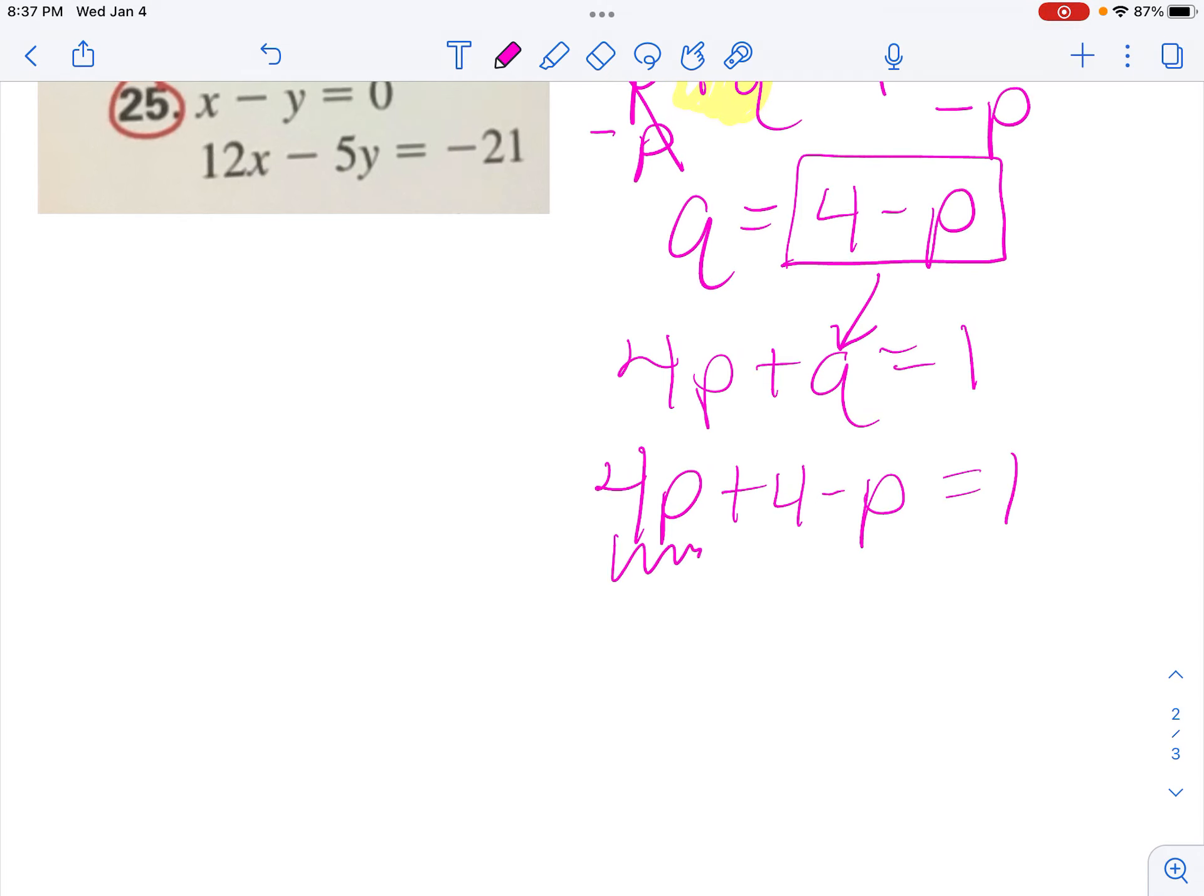Then I'm going to combine like terms, 4p minus 1p, because that's the same as saying 1p, is 3p, bring down my plus 4, equals 1.